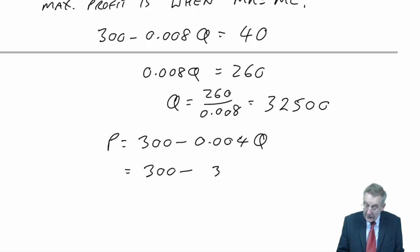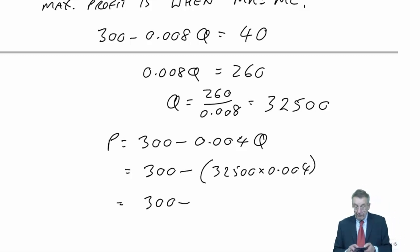If Q is 32,500, it's 300 minus 32,500 times 0.004.